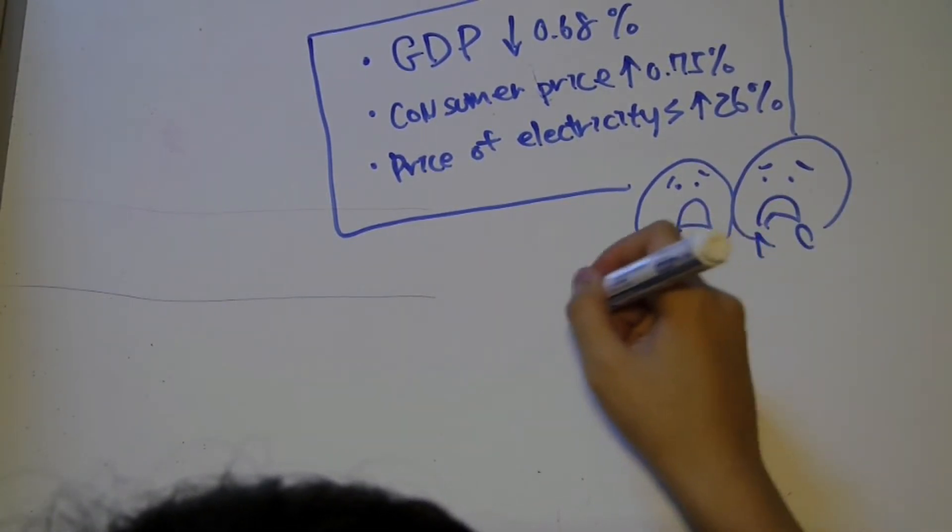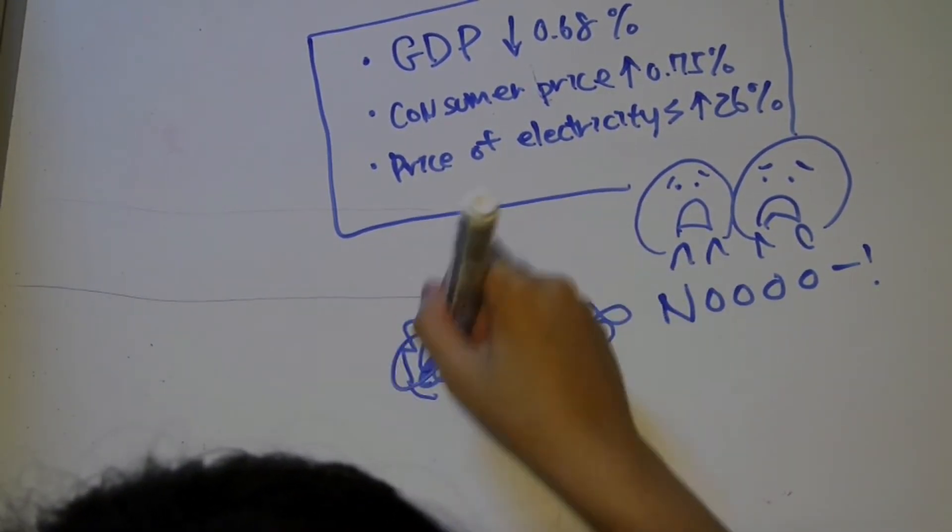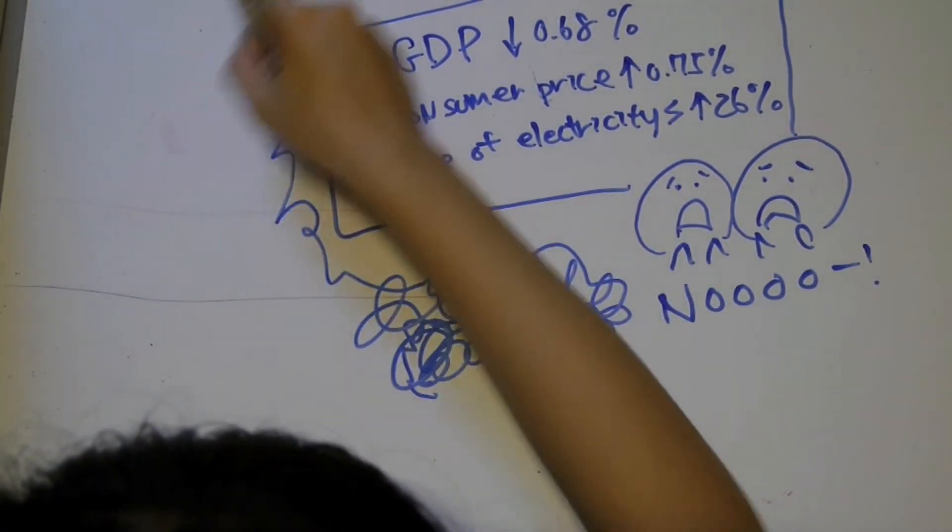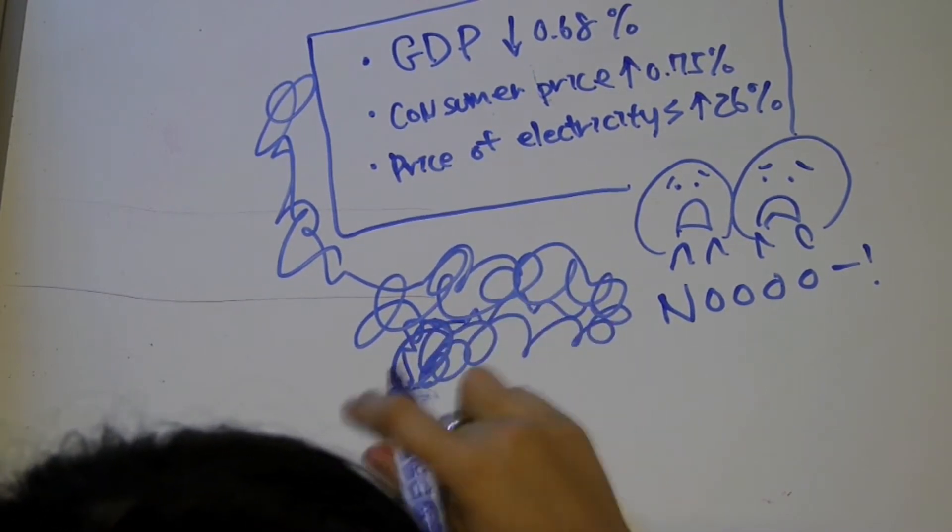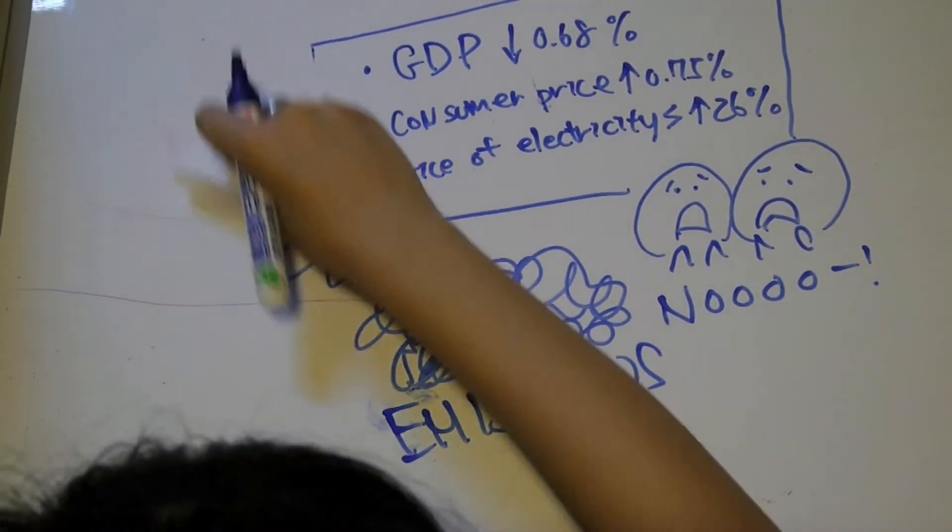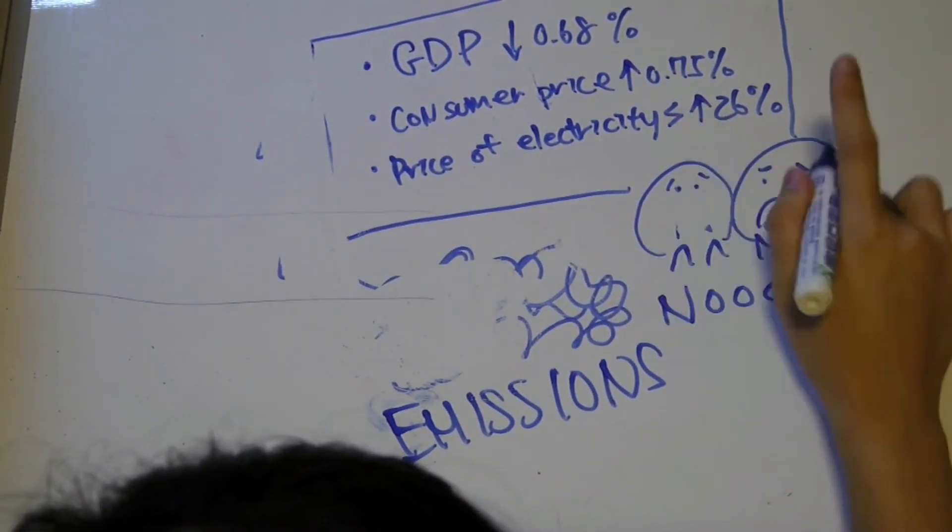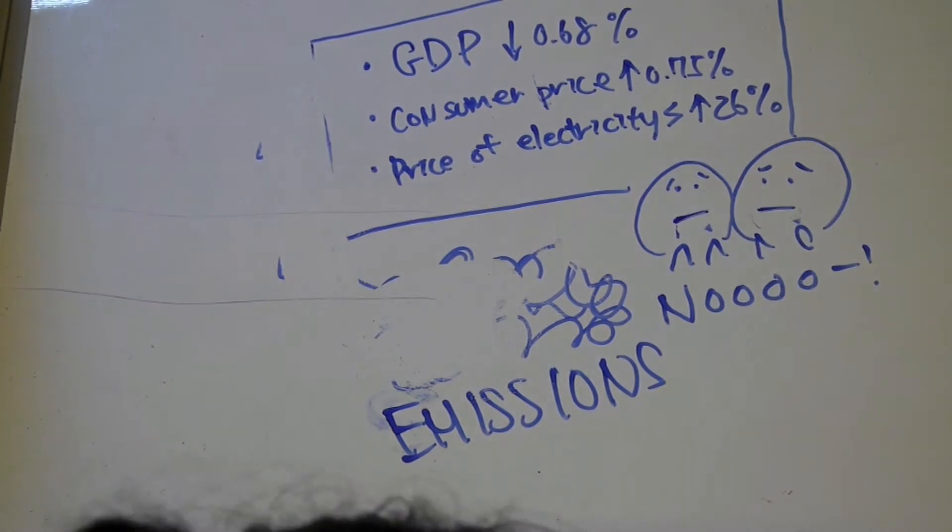Consumer prices may rise by 0.75% and the price of electricity may increase by about 26% as a result of the tax. Nevertheless, it allows Australia to make a substantial cut in its CO2 emissions. The simulation results imply an emission reduction of about 12% in its first year of operation.